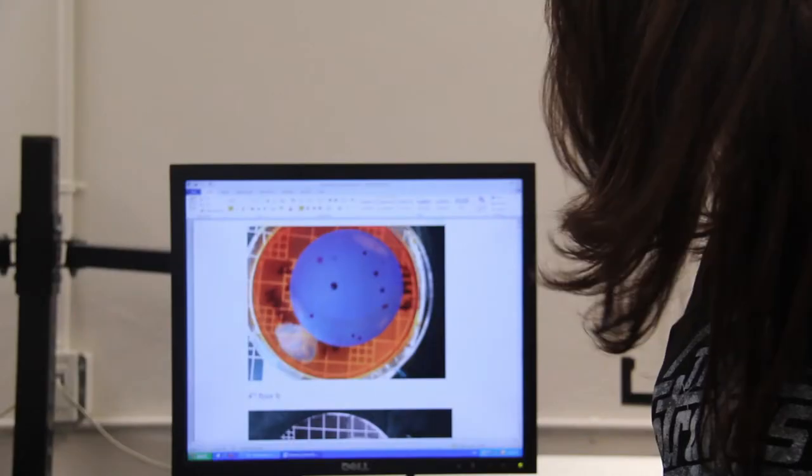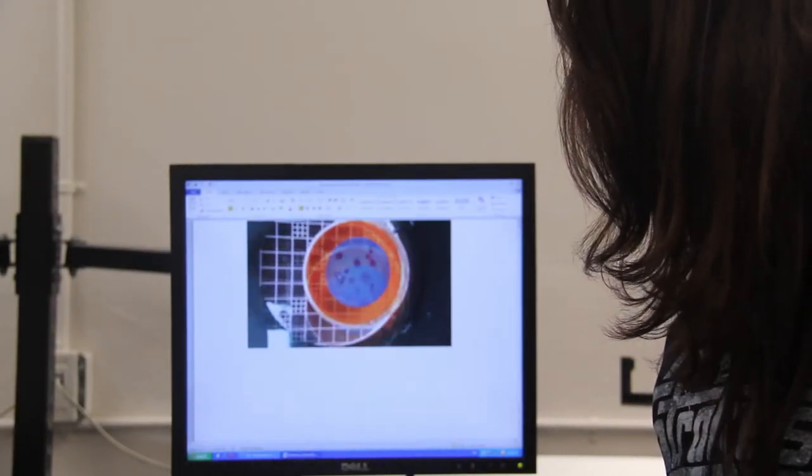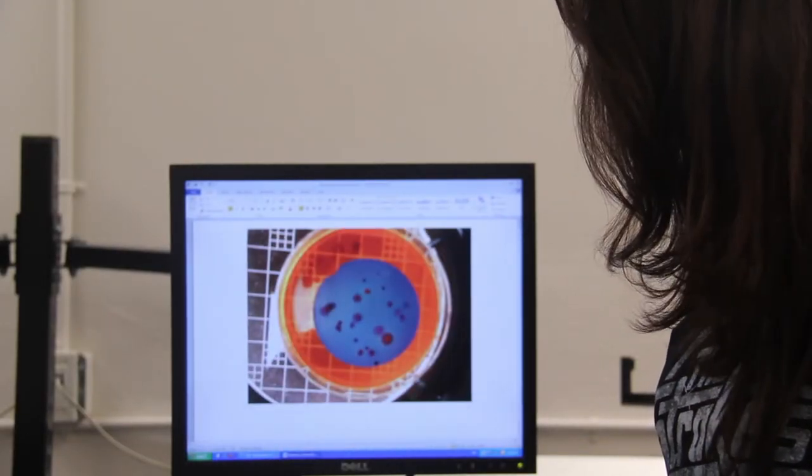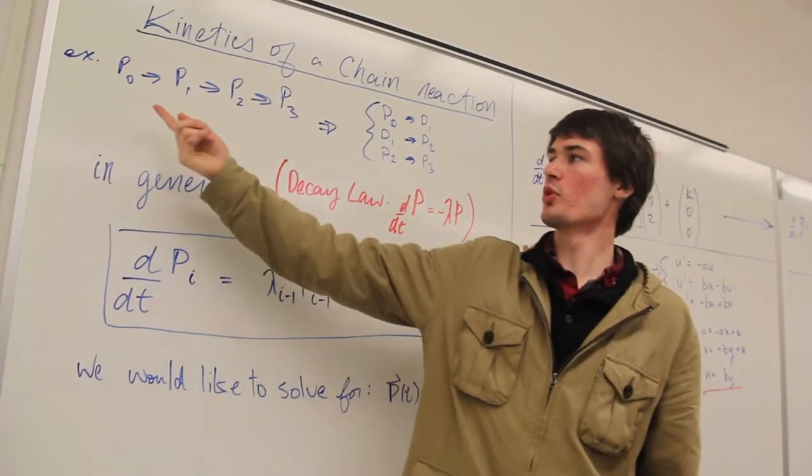In our bio labs we have a lab manual with step-by-step instructions. We follow it, we're done the lab, we leave. We have a lot of activities and whatnot, but here we have to find our own procedures for what we're trying to look for. If you don't have the equipment, we have to find an alternative. There's no one there to tell us what to do. It's just a guide, but we have to come up with the real work in the end.